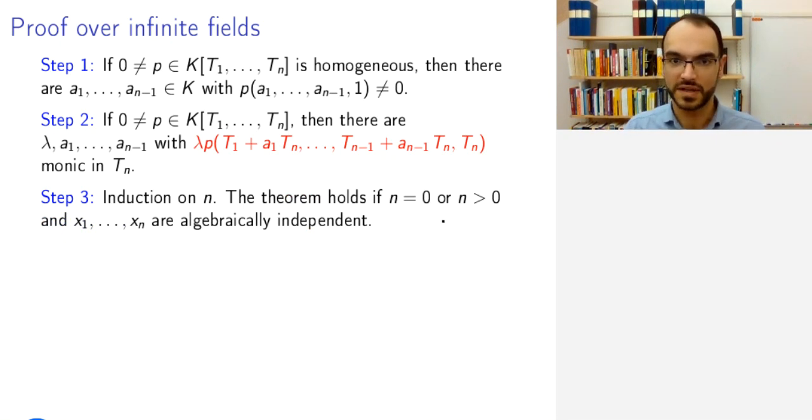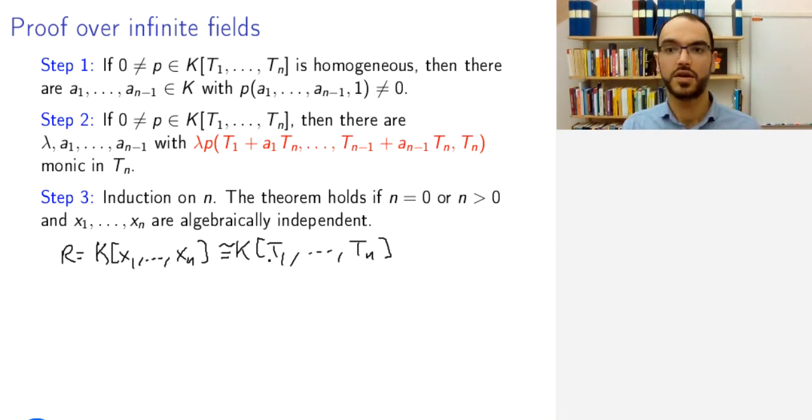If there are generators, but they are algebraically independent, meaning that they don't satisfy any polynomial equation together, this means that in fact our algebra R is just generated by these with no relations. So this is isomorphic to the polynomial ring in n variables. And then it is of course an integral or a finite ring extension over itself, so we are done.